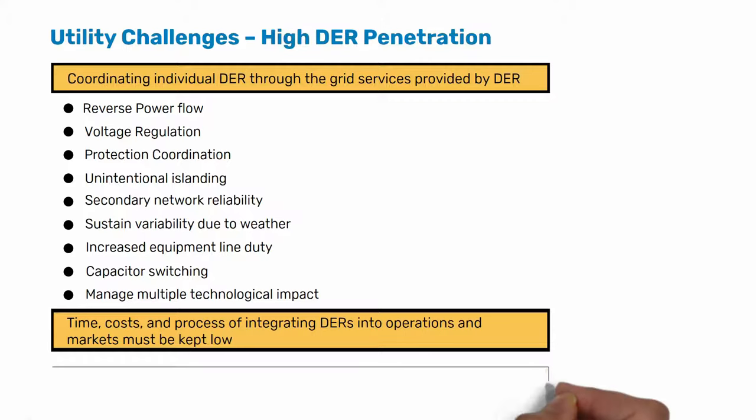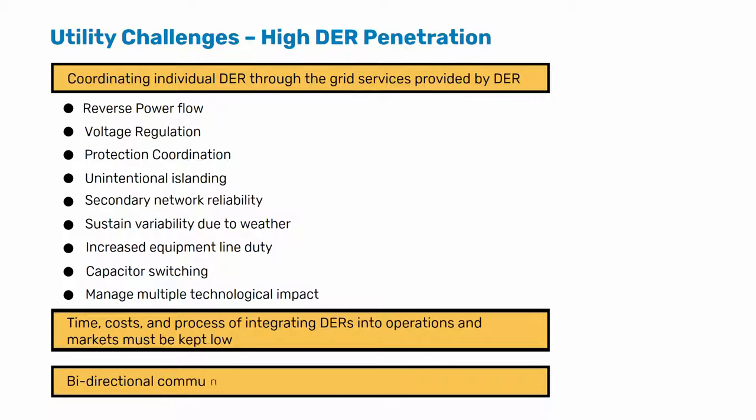Accurate forecasting and scheduling of variable distributed generation is also of significant importance for load dispatch centers. In this scenario, utilities need to establish a bi-directional communication link with each DER. However, coordinating with each individual DER becomes an enormous task for system operators.